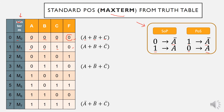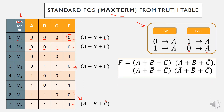Completing the remaining terms similarly, we then multiply or AND all the sum terms together to obtain the standard product of sum expression. We have four product of sum terms ANDed together to form this product of sum expression.